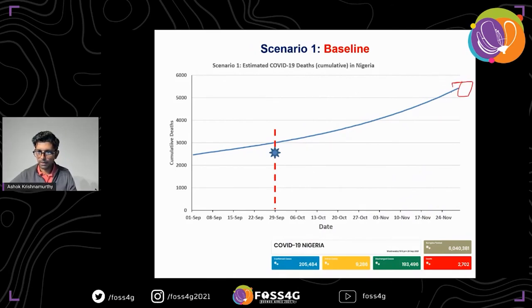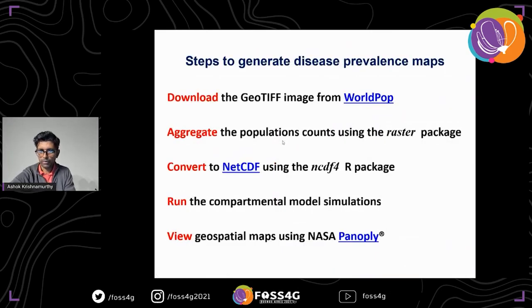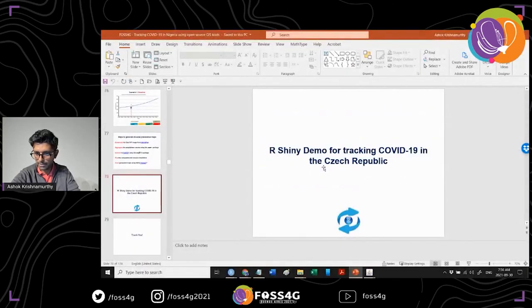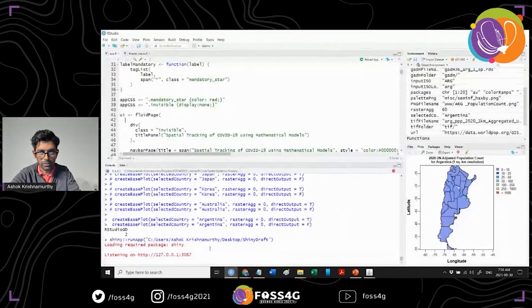Comparing projections to actual data: our model projects cumulative deaths reaching about 5,000 by November, while as of September 29, 2,702 deaths are reported — our model is slightly overshooting at close to 2,900 cumulative deaths. A quick recap: download the GeoTIFF from WorldPop, aggregate it, convert to NetCDF, run compartmental models, and view geospatial maps using NASA Panoply. Over the past few days we have moved to keeping everything within R, transitioning to an R Shiny application.